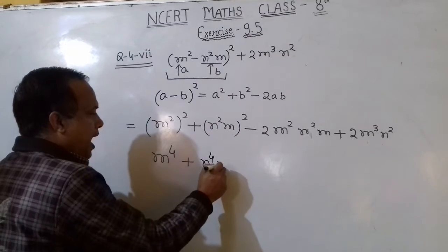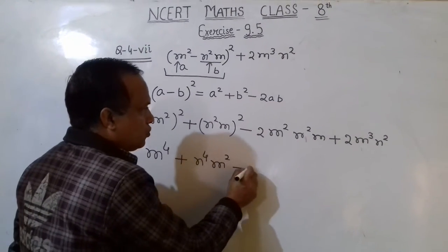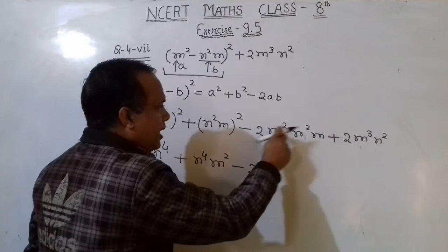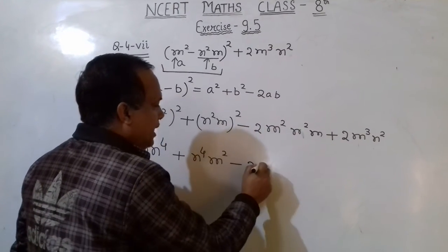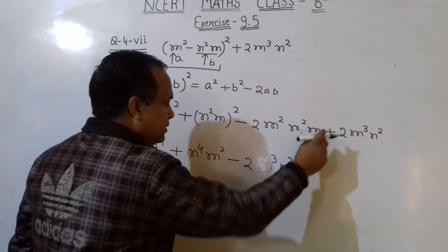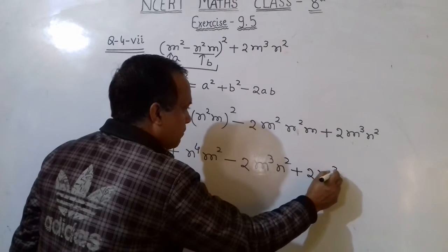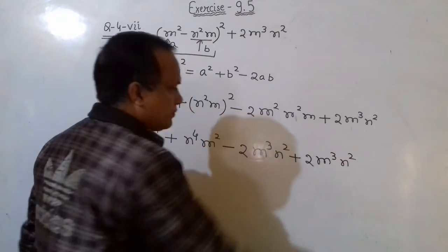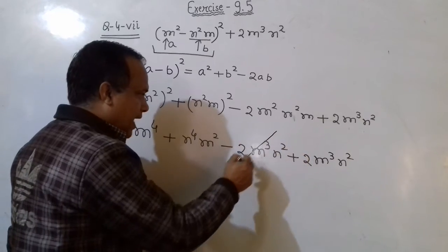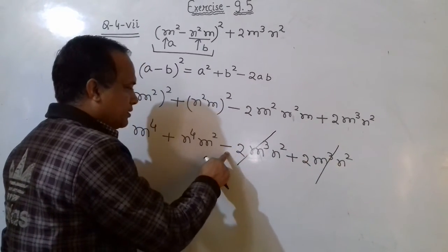And here, N⁴M² minus 2M³N² plus 2M³N². So this term is cancelled with this term because here is plus sign and here is minus sign.